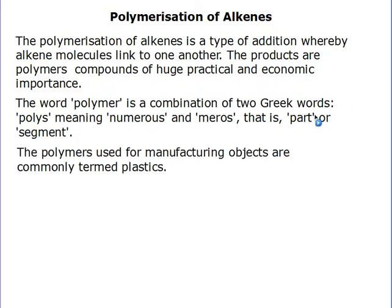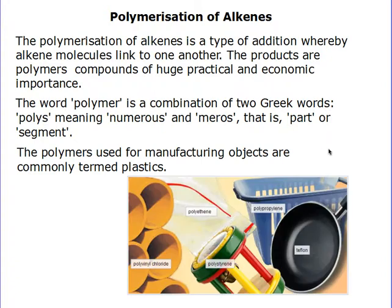Polymers used for manufacturing objects are commonly called plastics. There wouldn't be many places we go in the world where we couldn't see evidence of different types of plastics. Here are some examples.